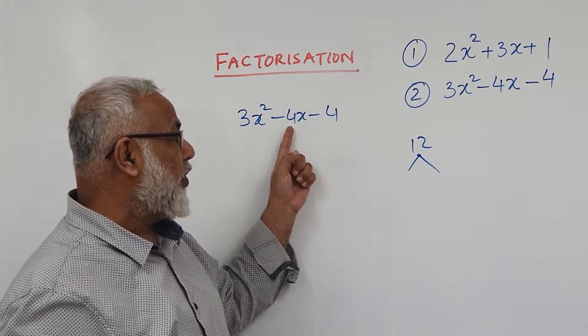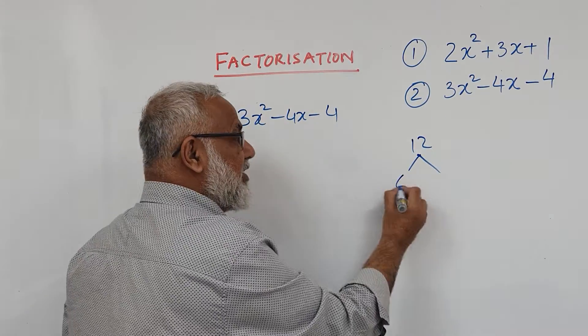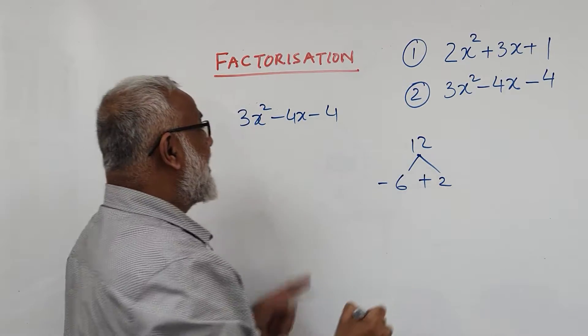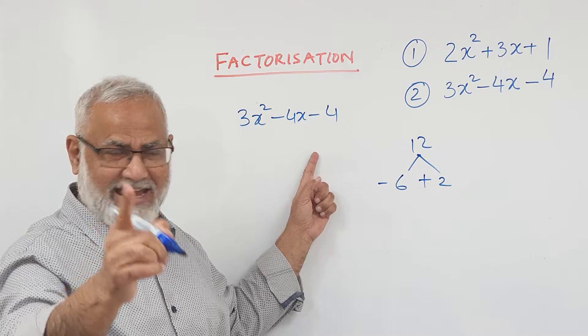You split into two numbers to get 4. 6 times 2 is 12. So minus 6 and plus 2 will give you minus 4. And what is the technique?